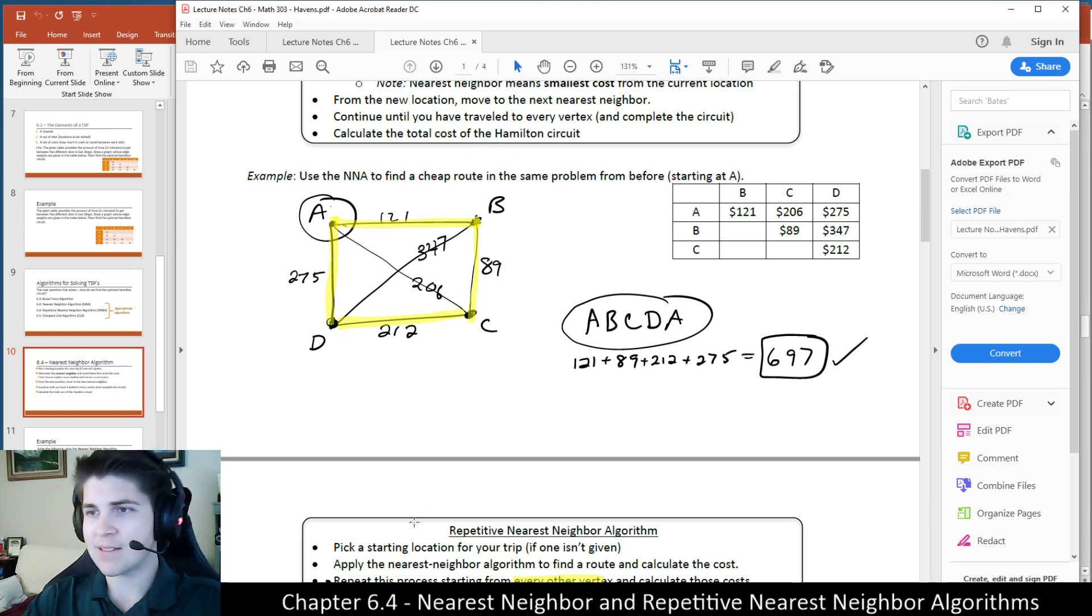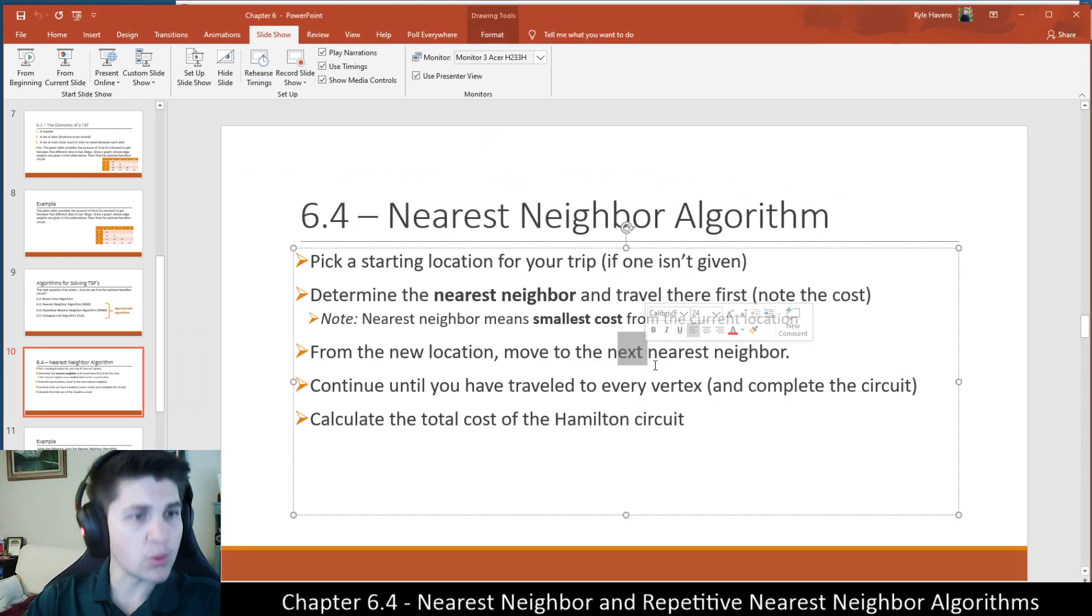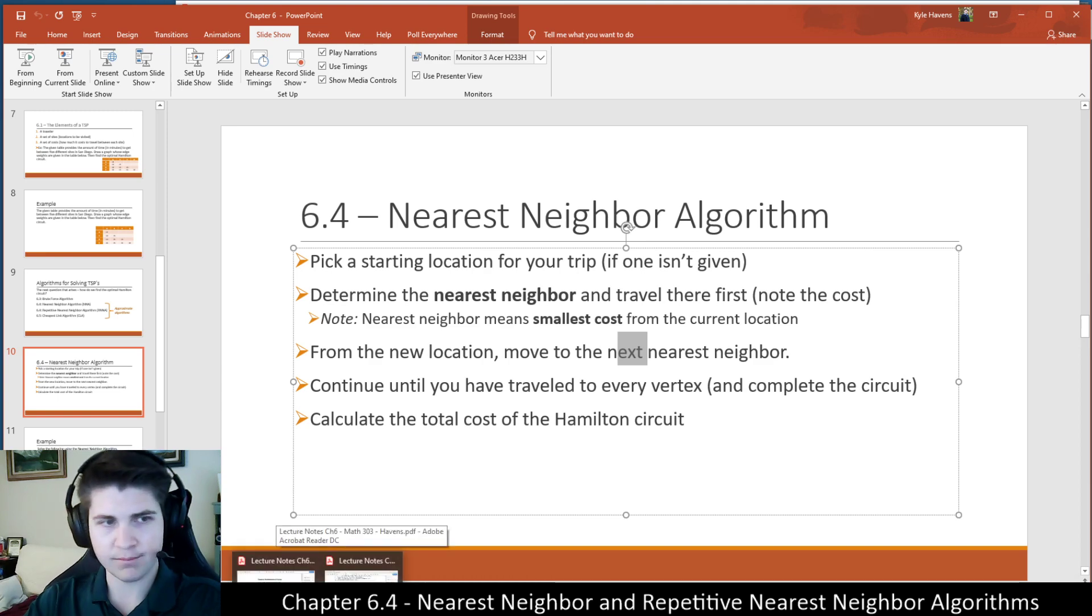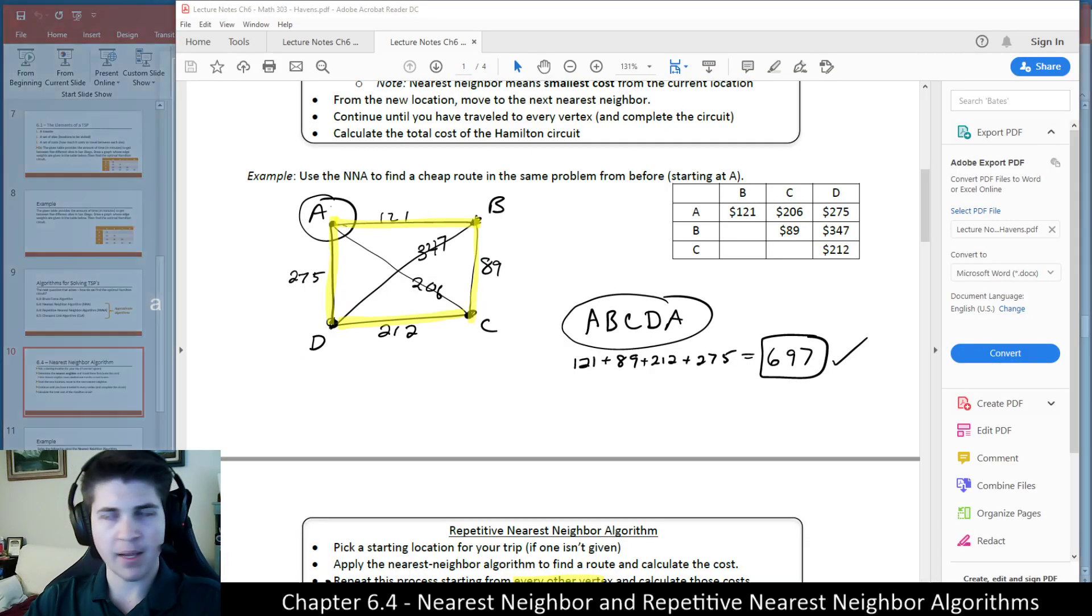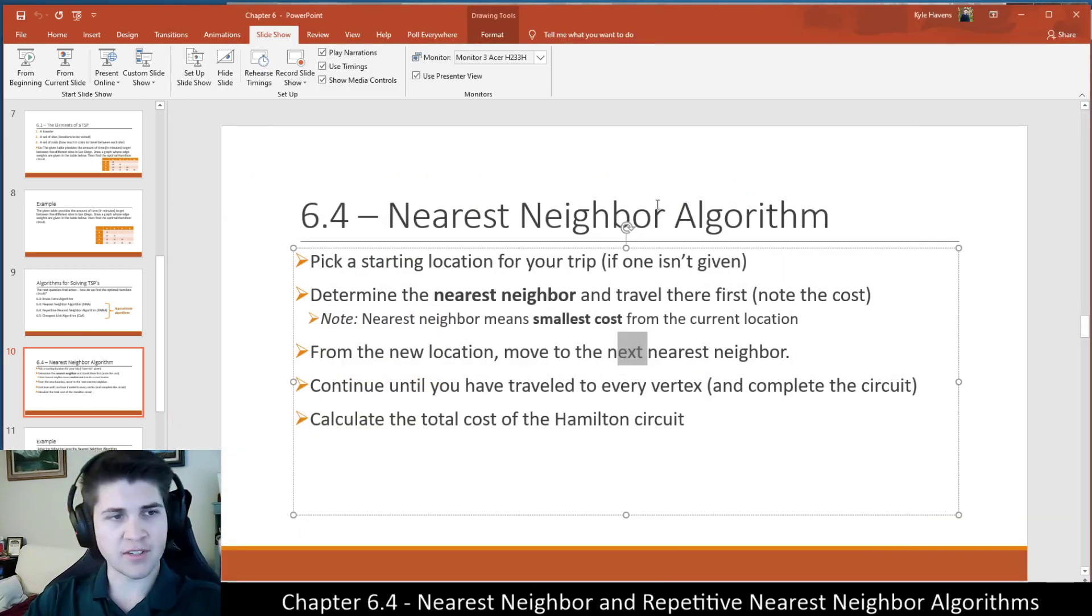And by the term next nearest neighbor, we're always implying that we're going to a new location always and never backtracking or somewhere we have not been. Because it would obviously be inefficient to travel back to A and then have to go to D and go home. Way more expensive than just going from C to A. So let's do a fresh example.